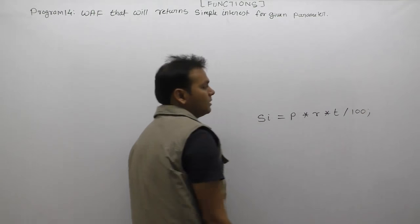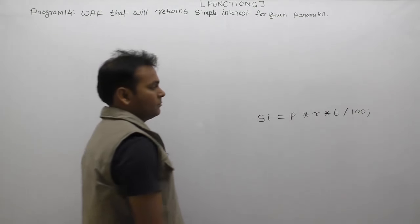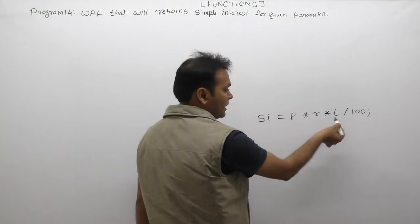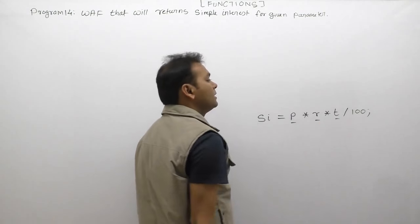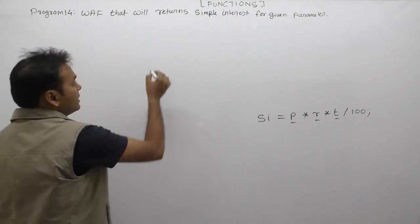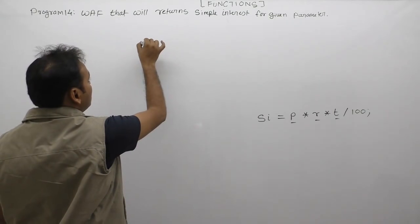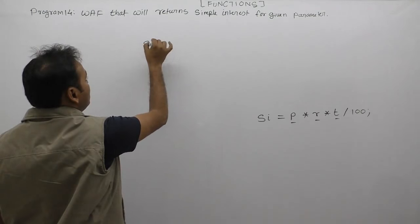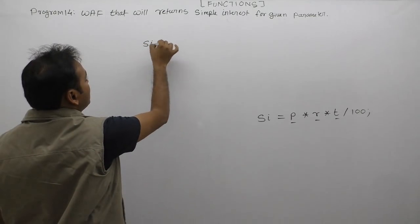Here in that case, inputs required are three inputs: P, R, T, where 100 is a constant value. That's why we are creating a function name SI, function name using as SI itself, or you can take simple interest any readable name.